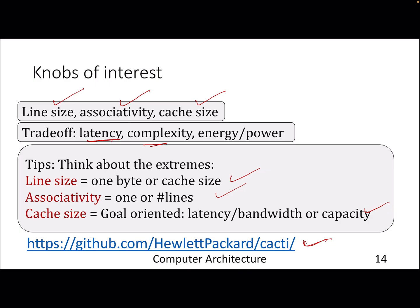Remember, all these parameters are interrelated. If you increase your cache size, it will affect your latency. If you are going from a 32 KB cache to a 1 MB cache, your latency number will go up. Similarly, if you are increasing your line size, your complexity will go up, and your energy and power will go up.